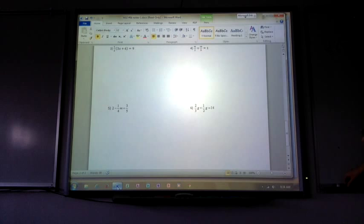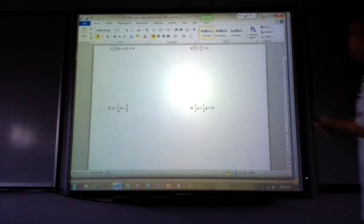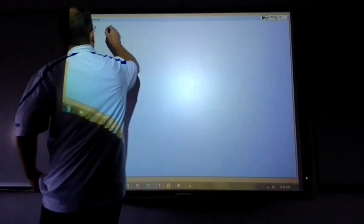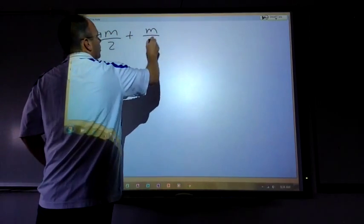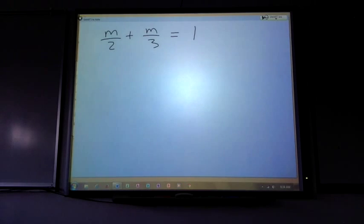Problem number 4 is m over 2 plus m over 3 equals 1. While you're working on it how many terms do we have? Three. Three. I have 3 terms, does everyone see 3 terms? I have 2 different denominators. What's the smallest number that both 2 and 3 share with each other? Six. So I'm going to multiply all 3 terms by what? 6 over 1. 6 over 1.